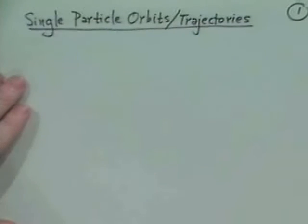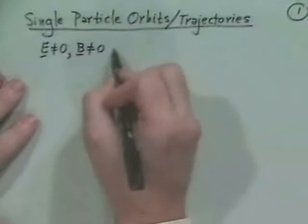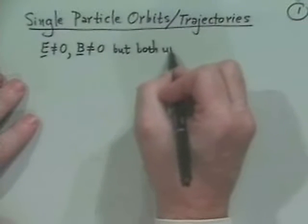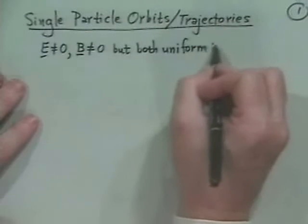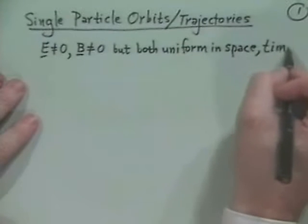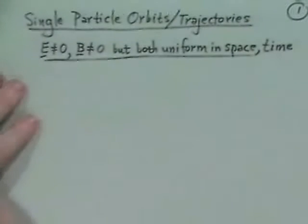The basic comment is that we've gone through some cases. First, we had an electric field and no magnetic field. Then we had a magnetic field and no electric field. So now what we'd like to do is treat them both together. The case we're going to consider next is that we have some electric field and some magnetic field — both uniform in space, namely constant, and also uniform in time.